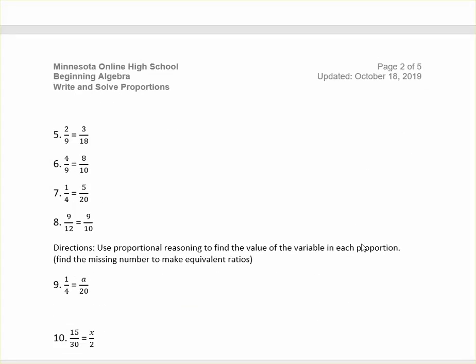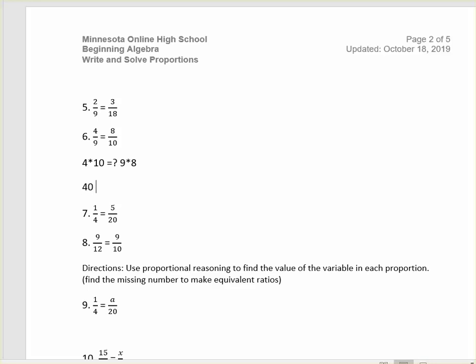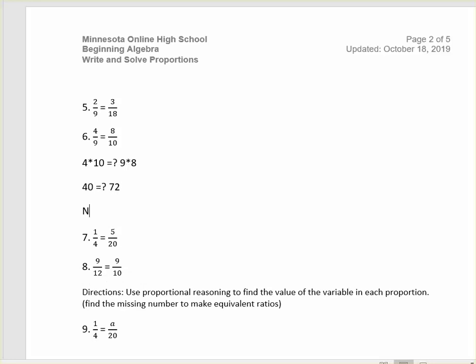Another way of checking is with cross products. Let's do number 6. So if I want to check this one with cross products, I would multiply the two diagonals. In number 6, the cross products would be 4 times 10, and we want to see if this is equal to 9 times 8. It's not, because 4 times 10 is 40, and 9 times 8 is 72. So this is not a proportion. That's how you do it checking cross products. It doesn't matter which order you do it in.